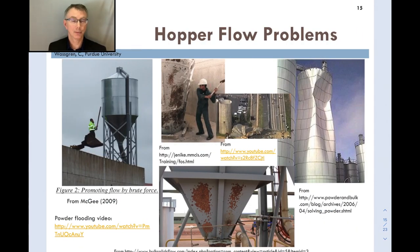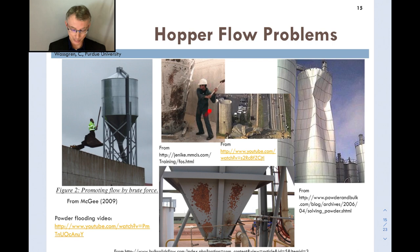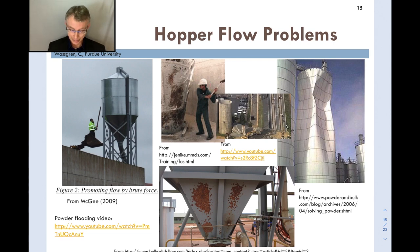When you have funnel flow or cohesive bridging, it's not uncommon to see workers going out with big sticks or sledgehammers to bang on the side of hoppers to try to discharge material. One image shows a worker in a bucket loader banging on a roughly 45-degree hopper wall — clearly unsafe. This kind of repeated pounding leaves a distinctive denting pattern on the hopper wall sometimes called 'hopper rash.'